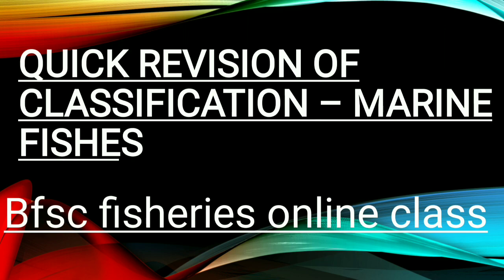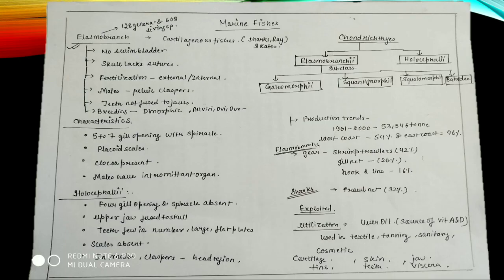We know that Elasmobranchii and Osteichthyes are the two Pisces classes, and we further classify Elasmobranchii for studying the family and order. In Chondrichthyes there are two subclasses: Elasmobranchii and Holocephali.